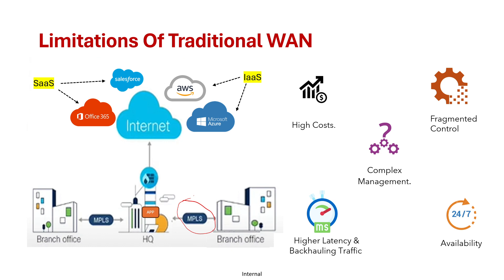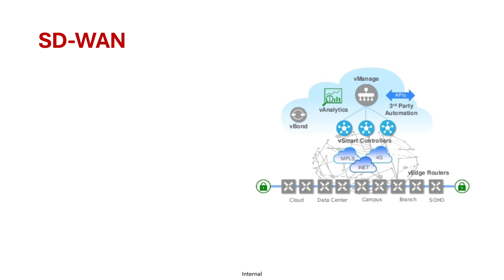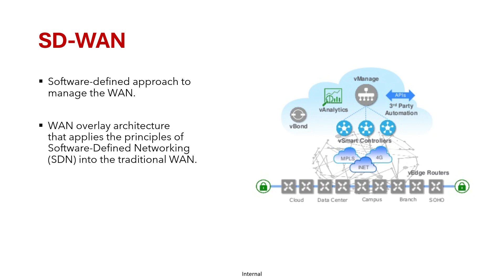There is also an availability issue — routing all traffic to the company's data center creates a single point of failure. This is where SD-WAN comes into the picture. SD-WAN stands for Software Defined Wide Area Network. It is a software-defined (SDN) approach to managing the WAN — an overlay architecture that applies the principles of SDN to traditional WAN.